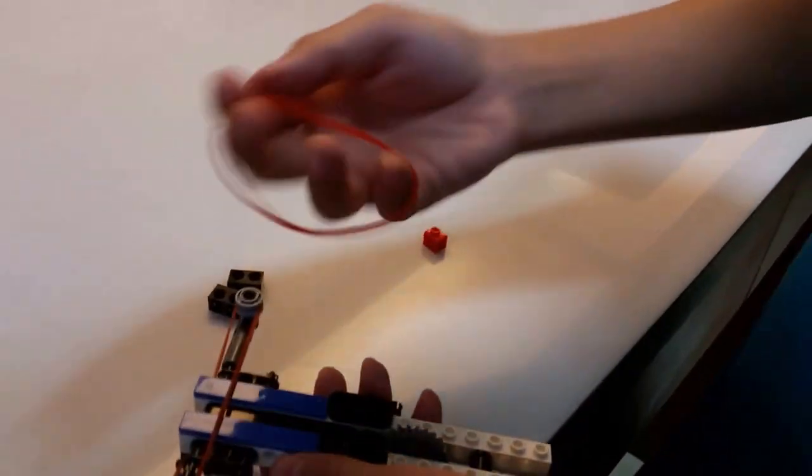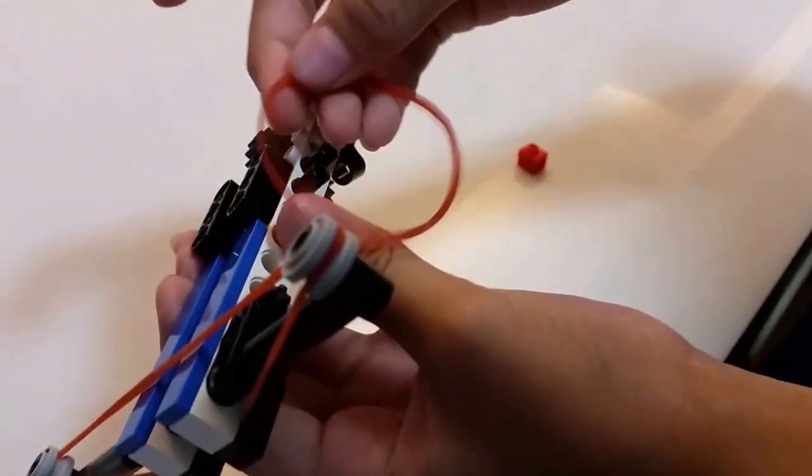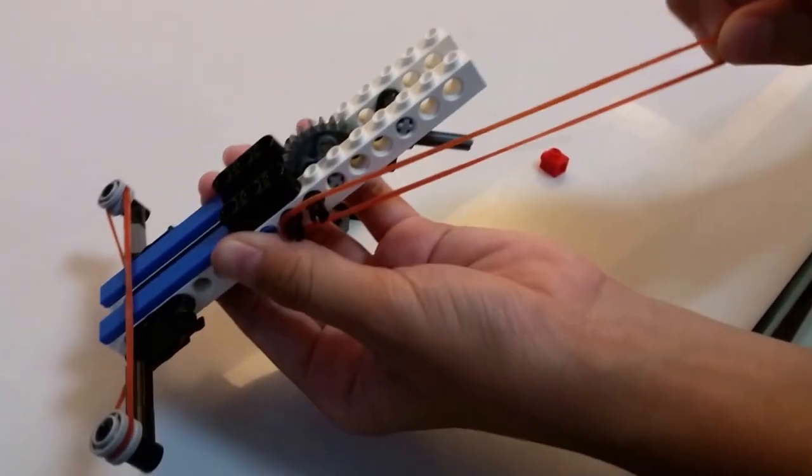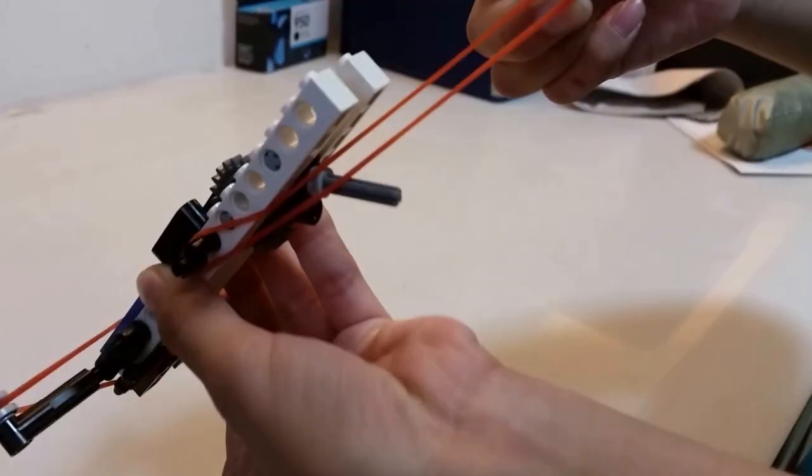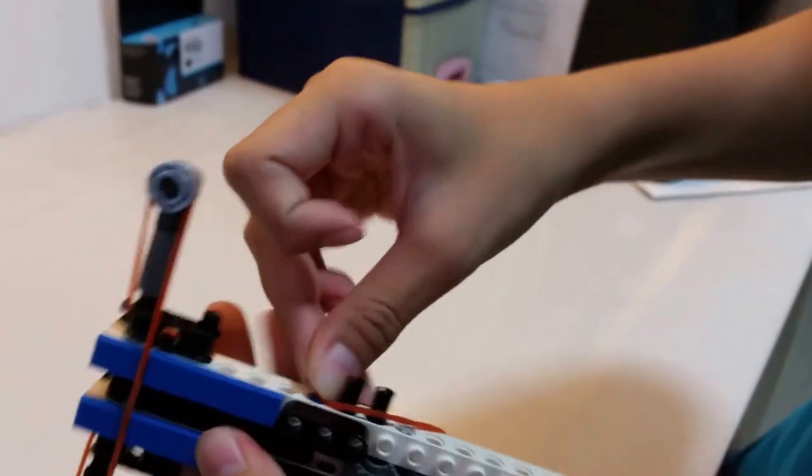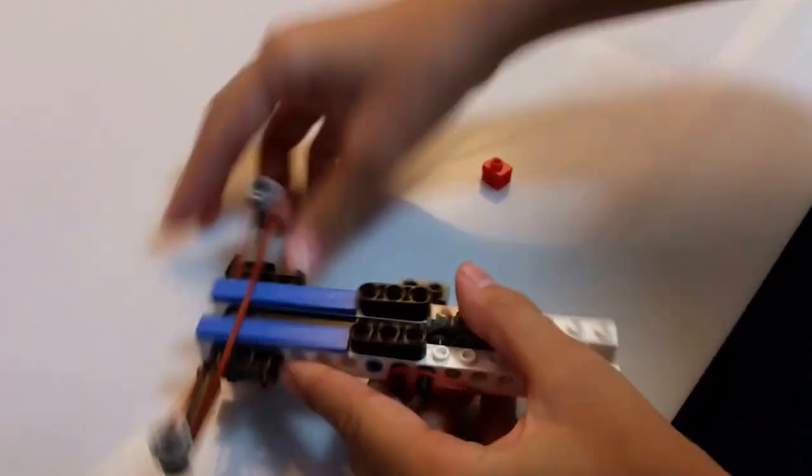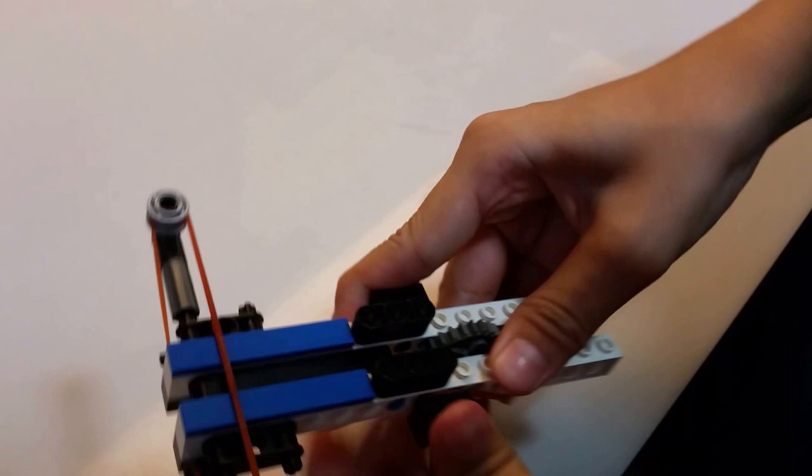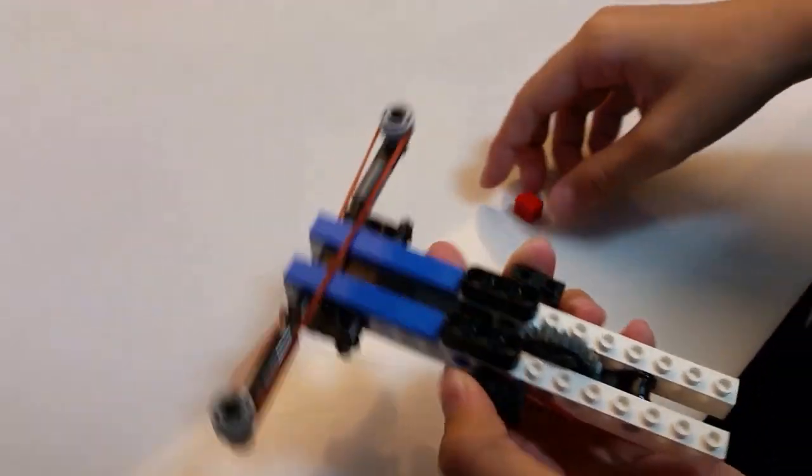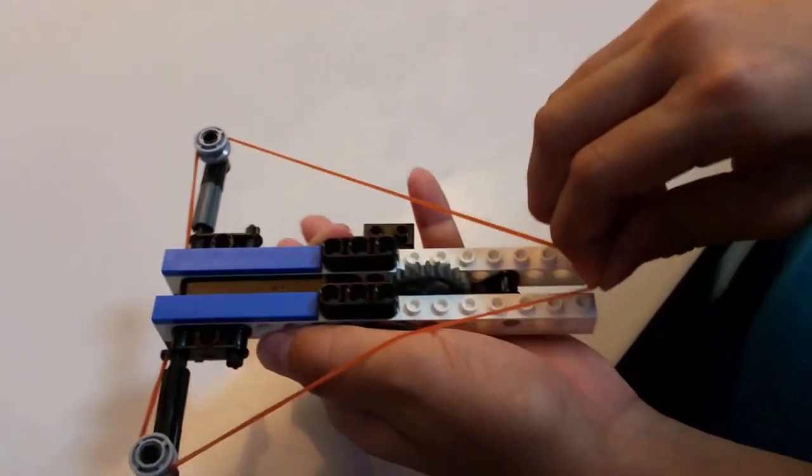Now take the last rubber band, hook it on one side of the two like that, and then onto the other side over here. Then place these two just like that and like that. There you go, you're done.